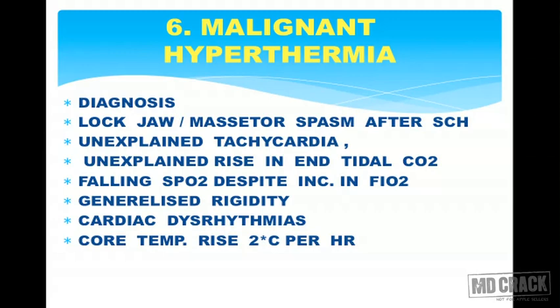After giving suxamethonium, the patient develops masseter spasm or lock jaw. There is unexplained tachycardia, unexplained rise in end-tidal CO2, and falling SpO2 despite increase in FiO2. There is generalized rigidity, cardiac arrhythmias follow, and core body temperature rises by approximately 2 degrees Celsius per hour. These are the signs of malignant hyperthermia.